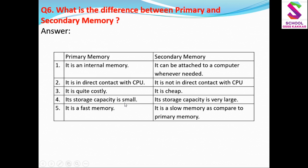Primary memory की जो storage capacity है वो बहुत ही कम है, जबकि secondary memory की storage capacity बहुत ही ज्यादा है। Primary memory is a fast memory - ये fast होती है, तभी तो computer के functions fast perform होती हैं और heavy applications एकदम से open होती हैं, क्योंकि RAM और ROM ठीक होना चाहिए। Secondary memory is slow as compared to primary memory.